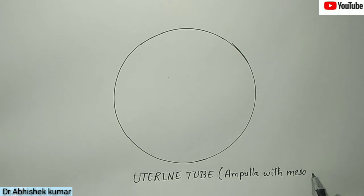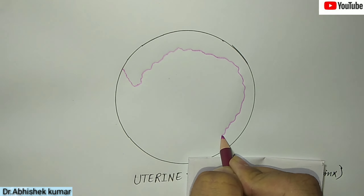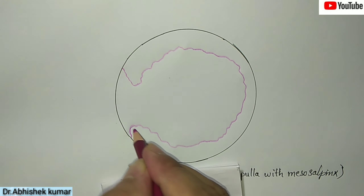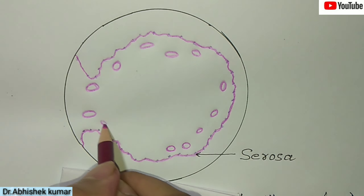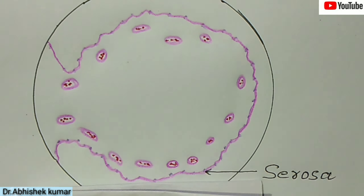Here we will see the ampulla with the mesosalpinx. This outer structure is the serosa of the visceral peritoneum — the outermost layer of the uterine tube — which is connected to the mesosalpinx ligament of the superior margin of the broad ligament. Numerous arterioles and venules are present here.